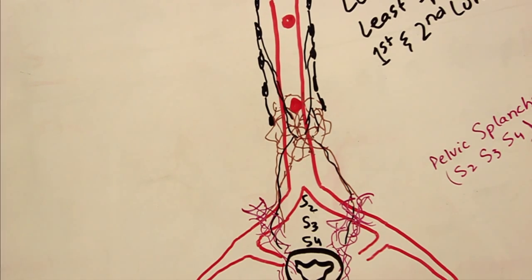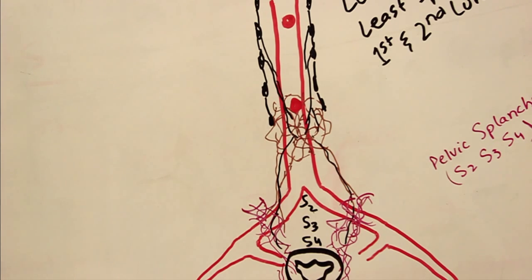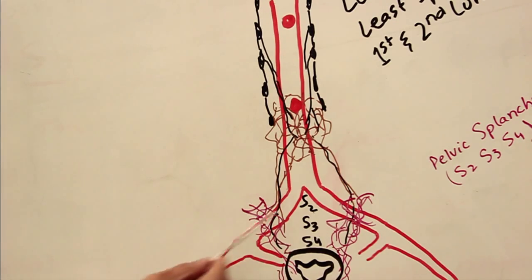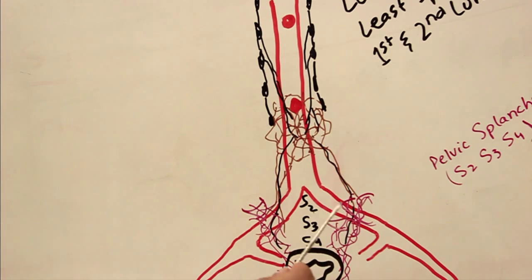In this video I'm going to talk about the innervation pattern of the urinary bladder, which is very important to understand. The bladder is innervated by the vesicle plexus, an intricate plexus of nerves surrounding the base of the bladder. This vesicle plexus receives input from the inferior hypogastric plexuses that contain both parasympathetic and sympathetic fibers.